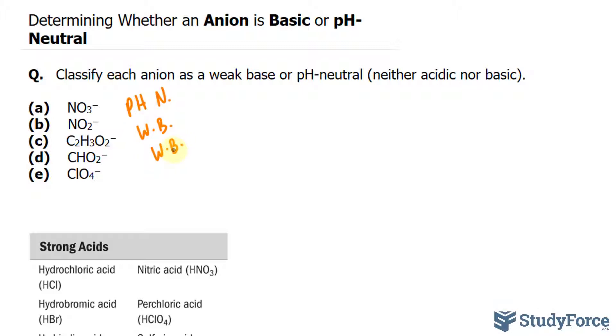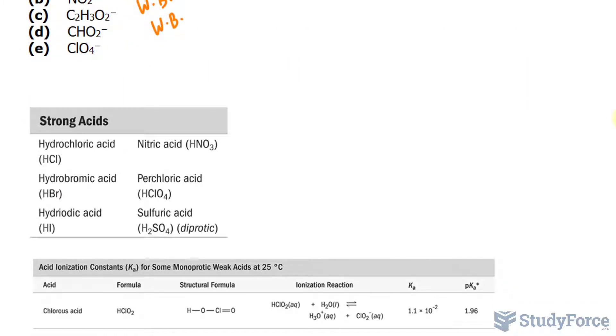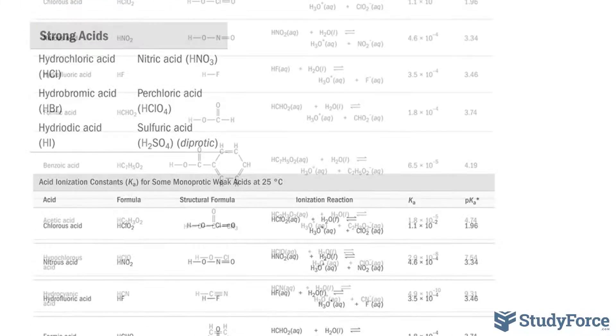The next example D, CHO2-. Let's see if we can spot that in this table. I can't, so it must be a weak acid. But let's double check. I found it right here.